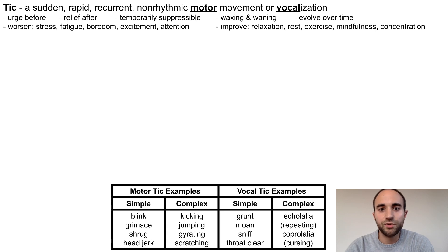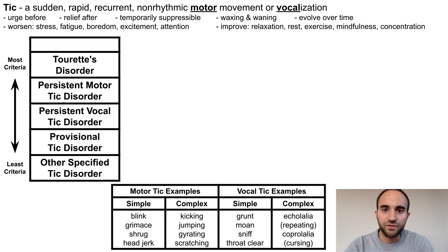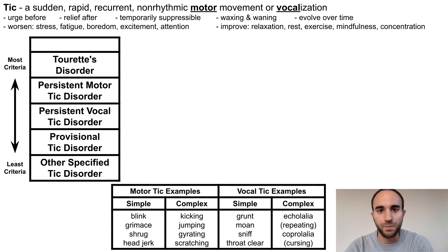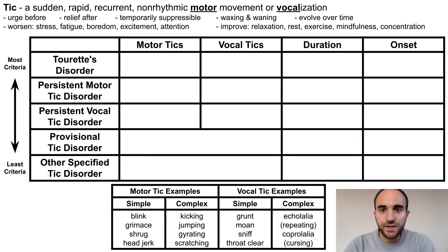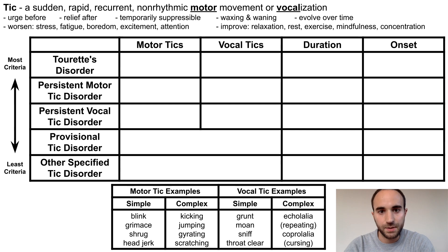Next, let's review the criteria for the different tick disorders. Listed in order from most to least stringent criteria, the tick disorders are Tourette's disorder, persistent motor or vocal tick disorder, and provisional tick disorder. I've also included the other specified tick disorder designation. These disorders are distinguished based on the number of motor and vocal ticks present, the duration of symptoms, and the onset of symptoms.